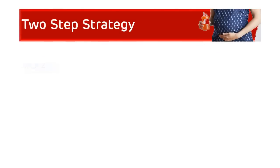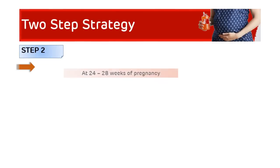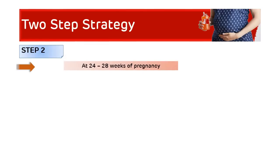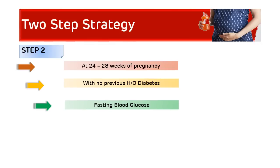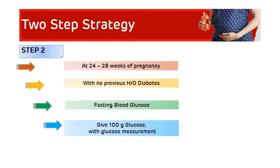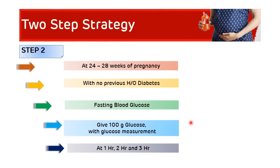In step two of the two-step strategy, done again during 24 to 28 weeks of pregnancy with no previous history of diabetes, fasting is required. A fasting sample is collected in the morning after at least eight hours of fasting, then 100 grams of glucose is given. Blood samples are collected at one hour, two hours, and three hours for glucose measurement — giving a total of four samples including the fasting sample.